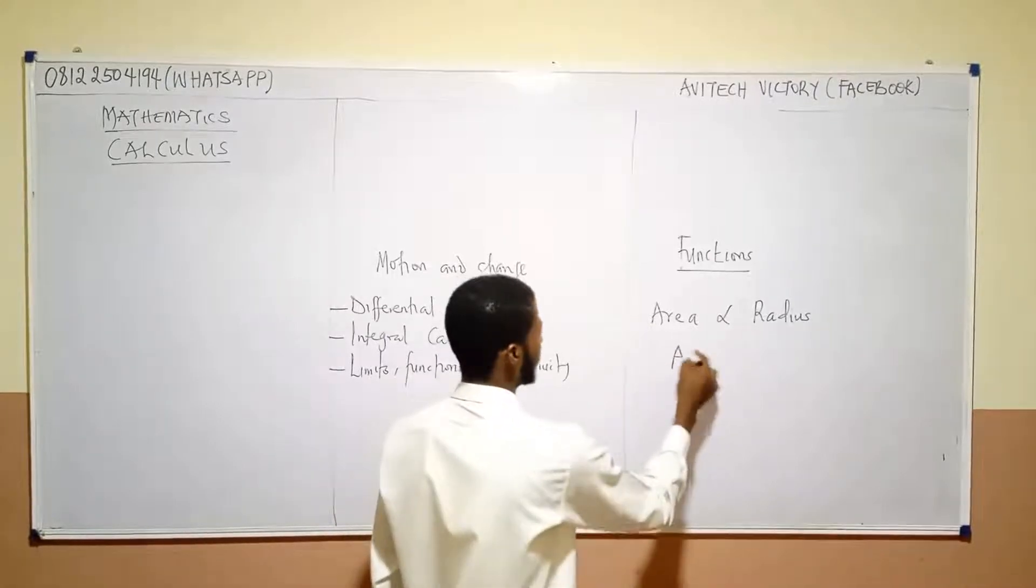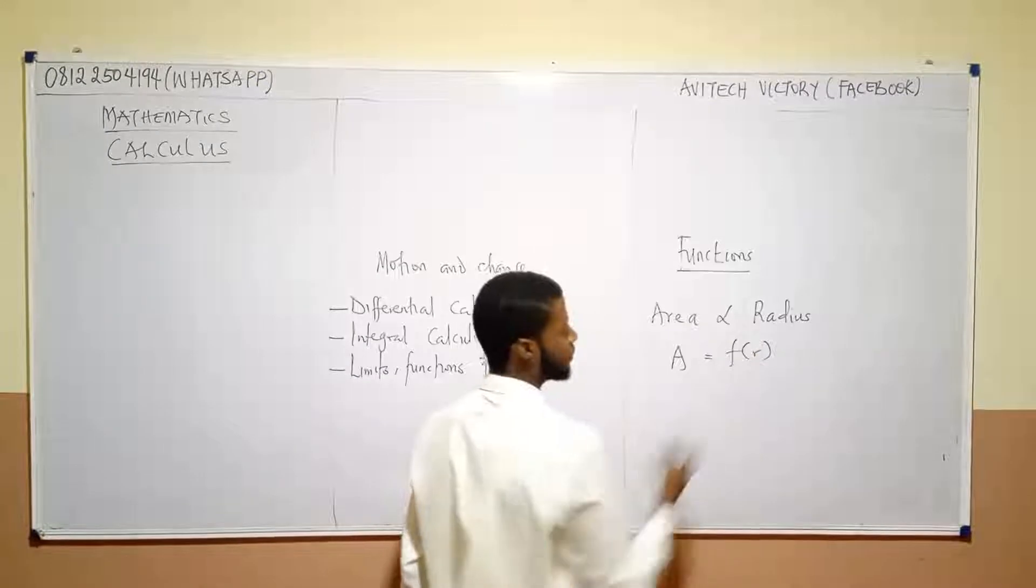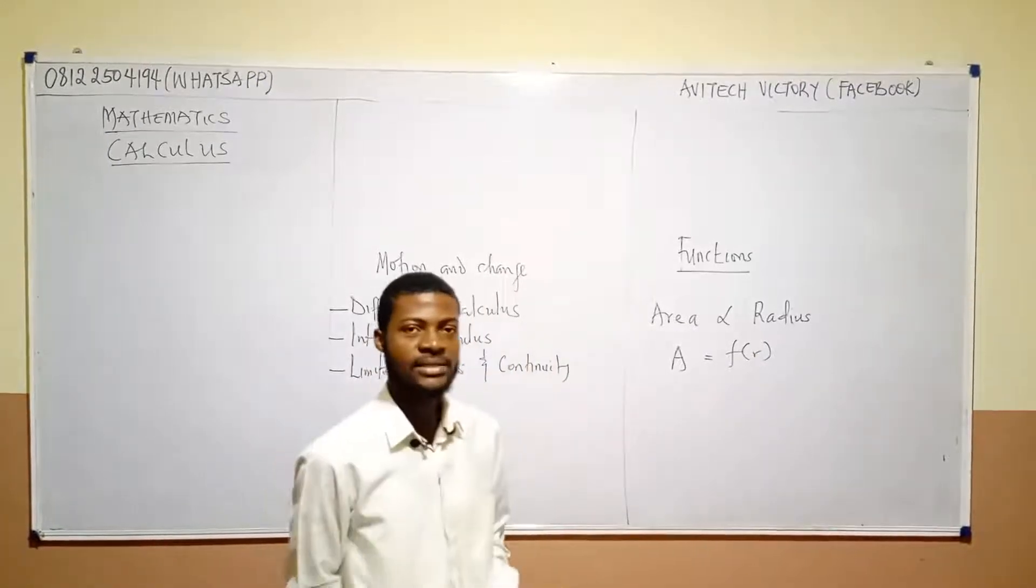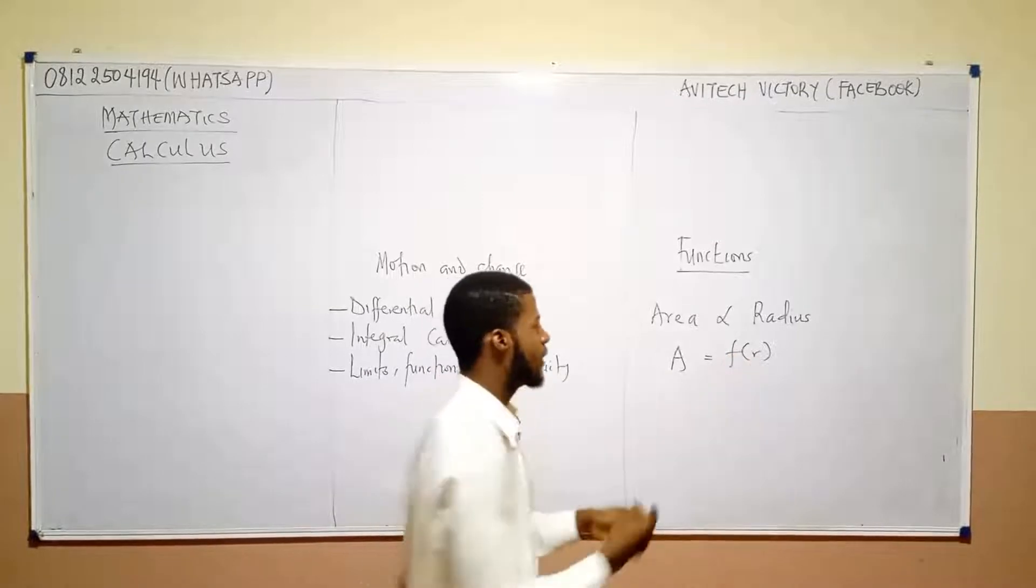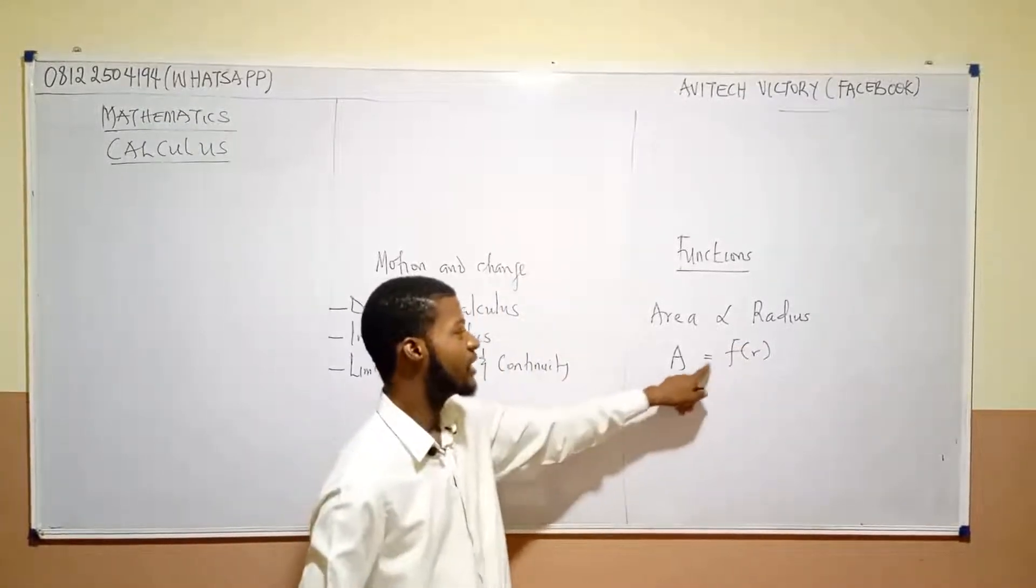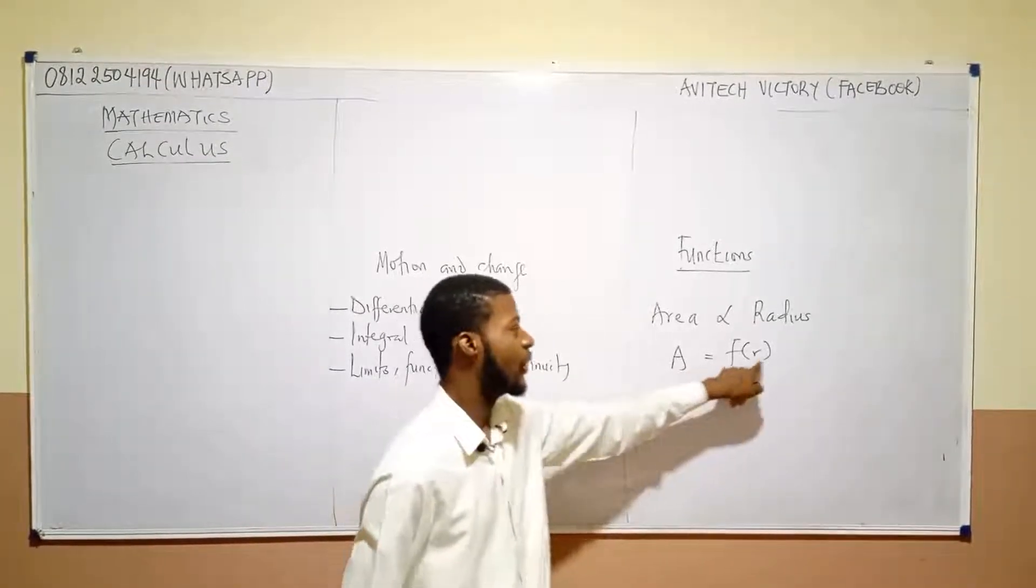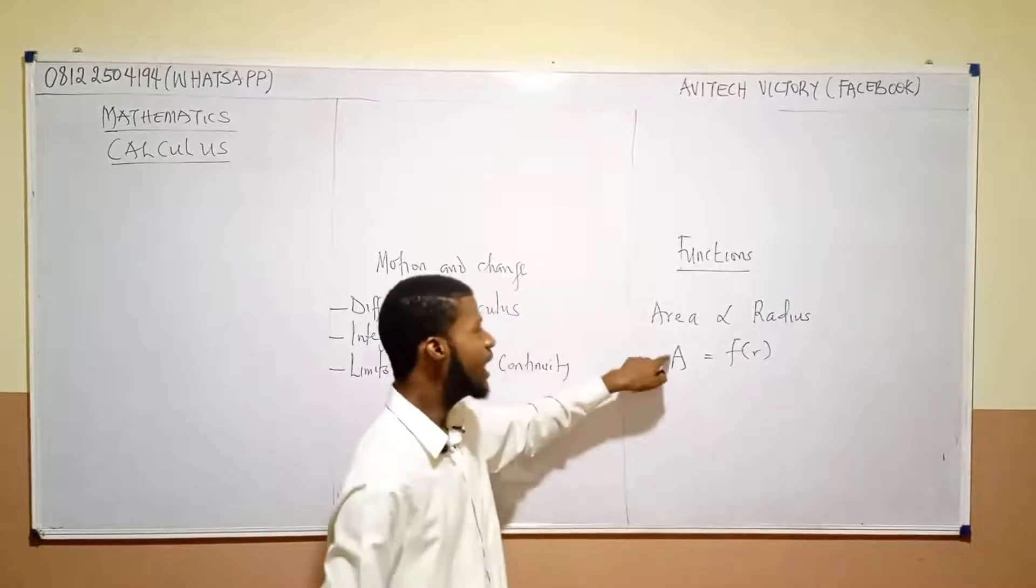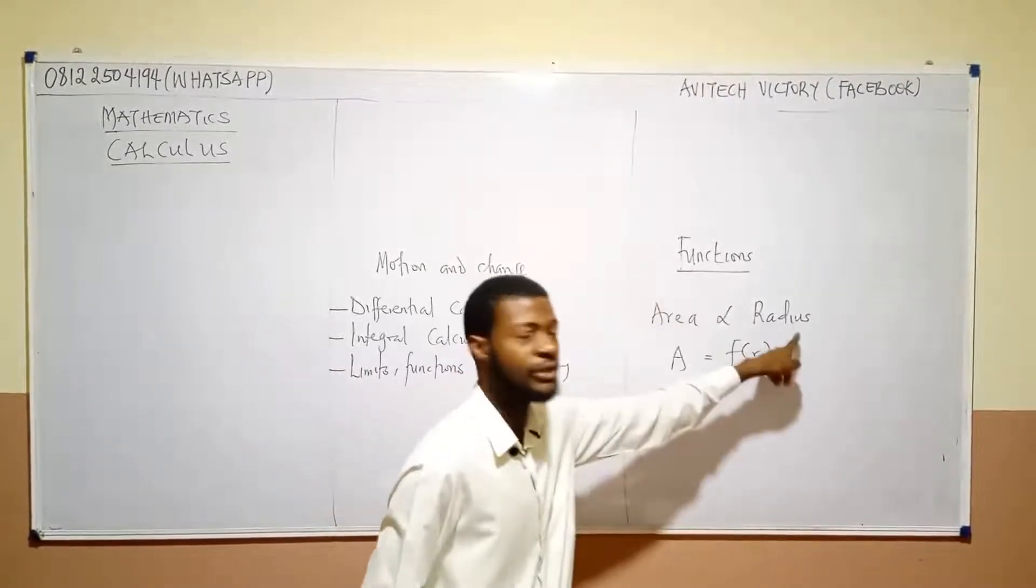So, somebody can say, the area is equal to f of r. It's possible. You can do that. The area is dependent on f of r. So, somebody can say, area is a function of radius. That's the meaning. Somebody can say, area is a function of the radius. Now, see, a here, remember I said, a depends on what? The radius.